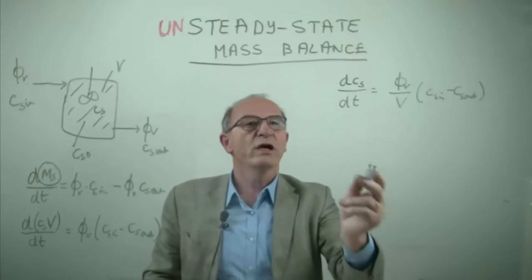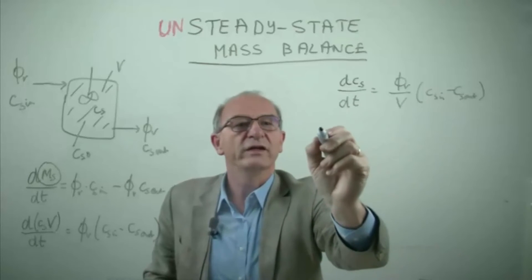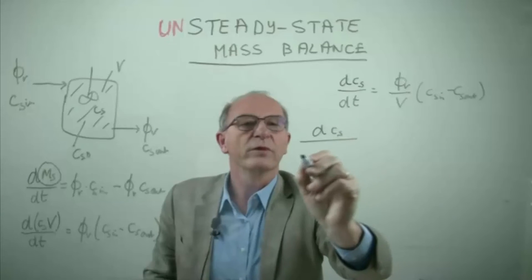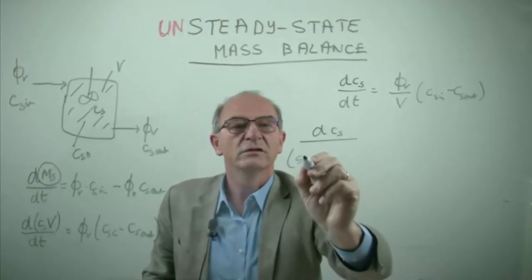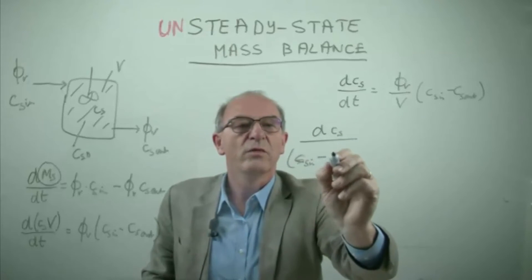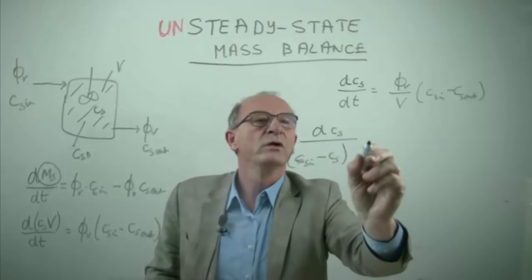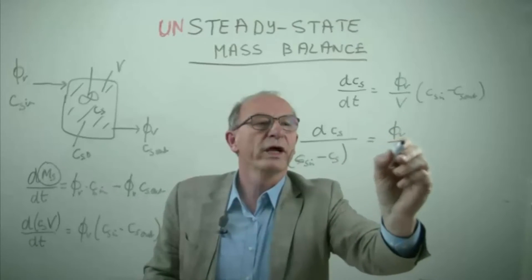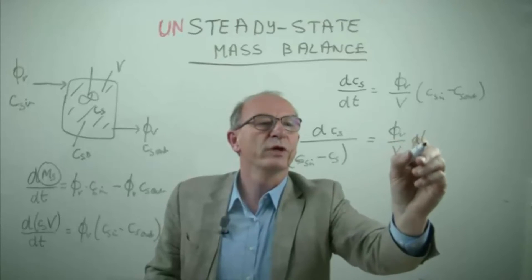Now we have to separate the variables. So at this side we write down dC_s divided by C_s_in minus C_s is equal to the volume flow rate divided by the volume multiplied by dt.